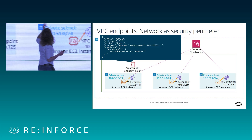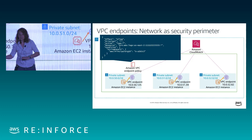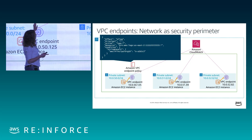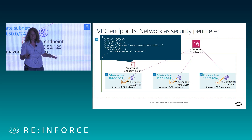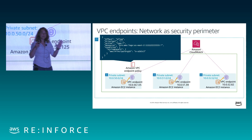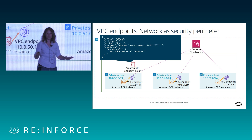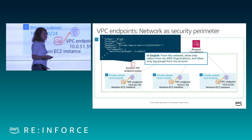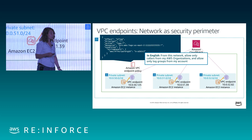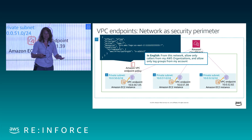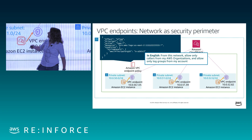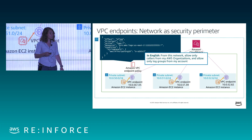Here's a VPC endpoint policy — yet another IAM policy, except it's not attached to a principal, resource, or organization. It's attached to a network. This is network as security perimeter. It has a new condition: principal org ID — meaning the principal must belong to this organization. What this policy means is: the maximum permissions that can be obtained by anybody who calls CloudWatch Logs through this endpoint is this. In this network, the only CloudWatch Logs calls that are going to get made are principals in my organization calling log groups in this particular account. You can hang all kinds of security invariants off of your network like this.